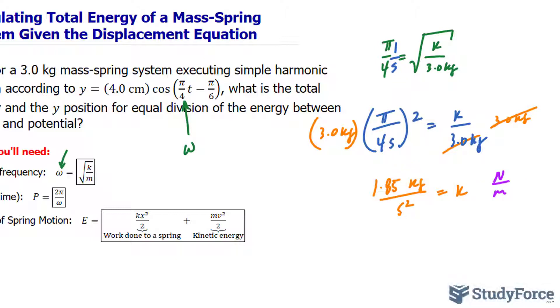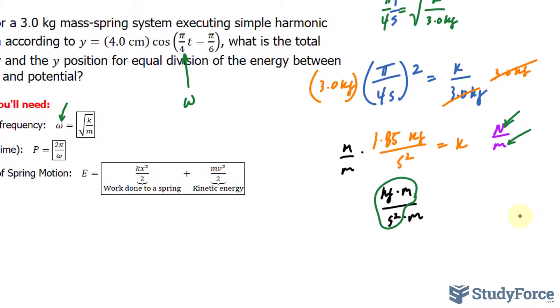And what this will give us is kilograms times meters per second squared times meters. This is the unit for newtons, and that's where that part comes from, and this meters is the meters of the spring constant. So our final answer for the spring constant is 1.85 newtons per meter.